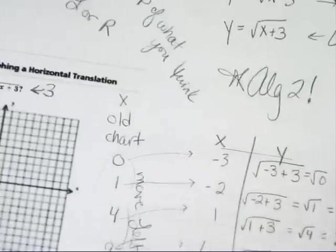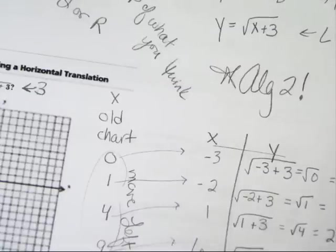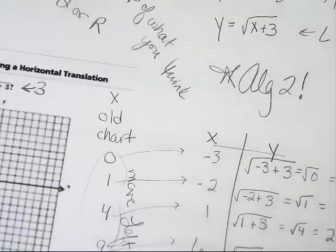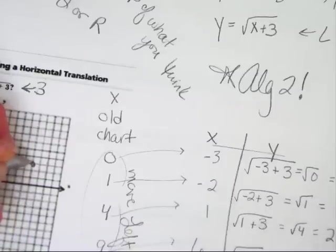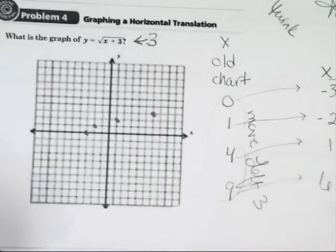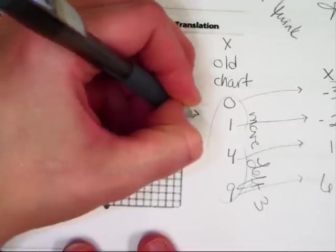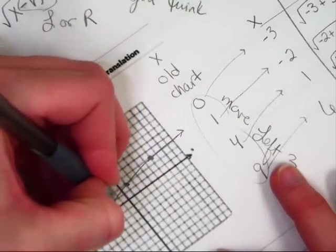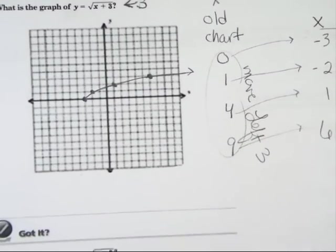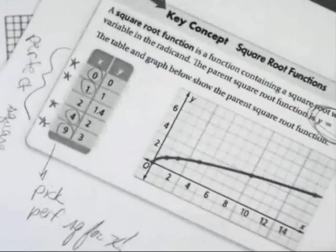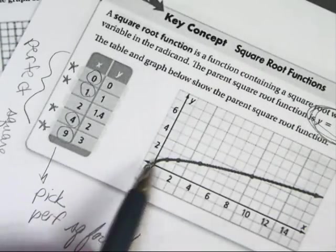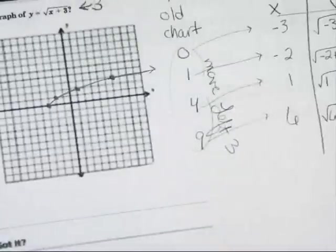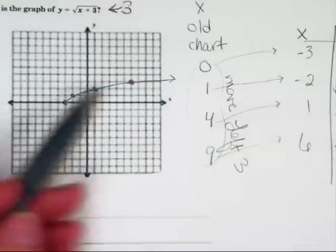Plot your points: (-3, 0), (-2, 1), (1, 2), (6, 3). Draw the arc that connects them — make it a parabolic type of shape, almost half of a U. Can you see how from the original parent function that started at (0, 0), this graph moved to the left three units? There it is — to the left, three units.